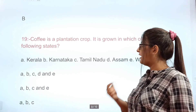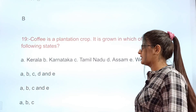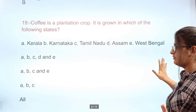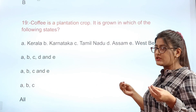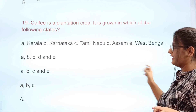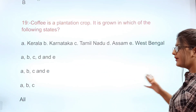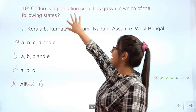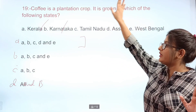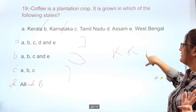Question 19: Coffee is a plantation crop. In which of the following states is it grown? Options given include: A Kerala, B Karnataka, C Tamil Nadu, D Assam, E West Bengal. The correct answer includes Kerala, Karnataka, and Tamil Nadu — Option B — as these are the states where coffee cultivation takes place.